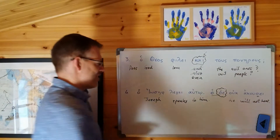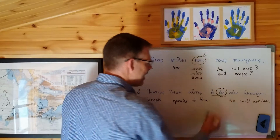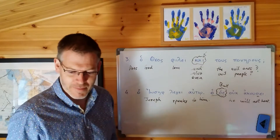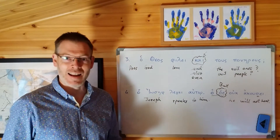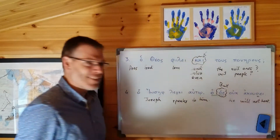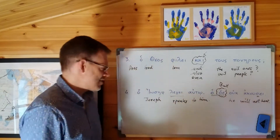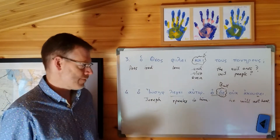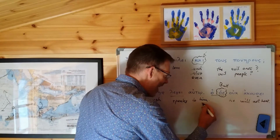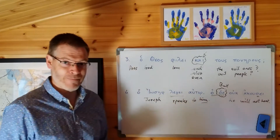So what then does ho de do? It's certainly possible that de in this context could mean 'but.' Recall, as we've mentioned previously, that de in general can mean 'and' or 'but' - Duff mentions it's a weak 'but' in comparison with alla, which is a strong 'but.' But the real significance of this is that the grammatical subject has changed. Notice: who is the subject of the first verb? Joseph. And who is the subject of this verb - the one who will not hear? It's actually the him. Joseph speaks to him, but he - the one whom Joseph is speaking to - will not hear. So we've got a change of subject.